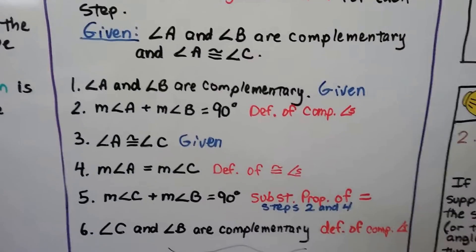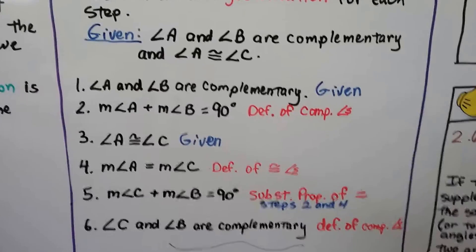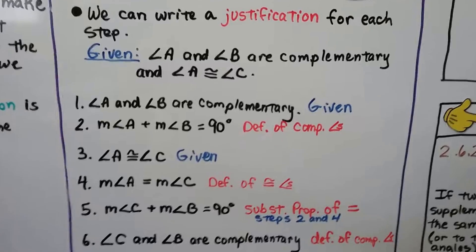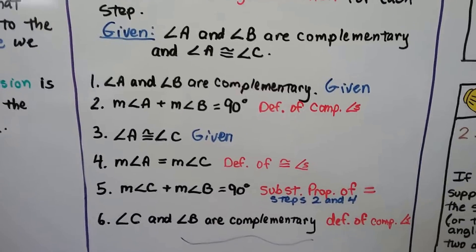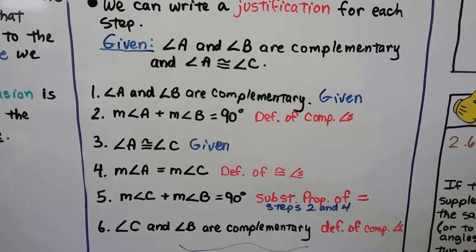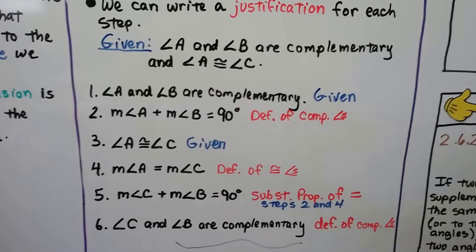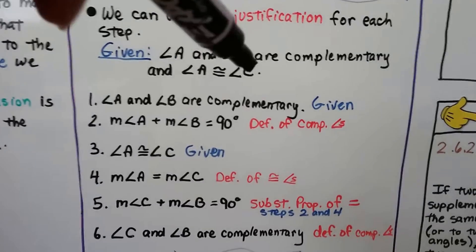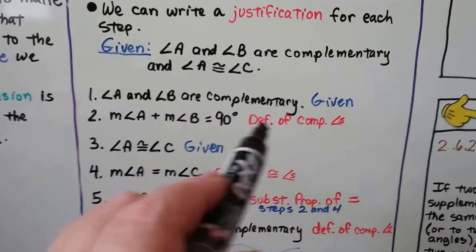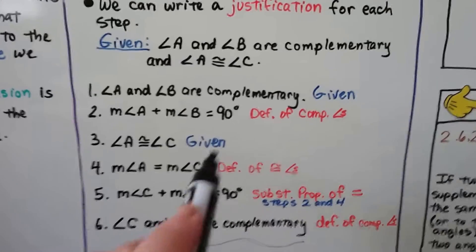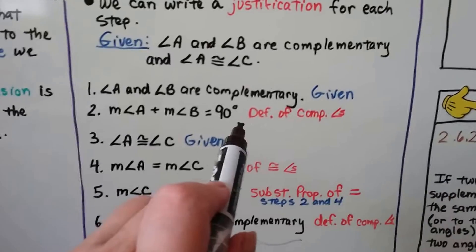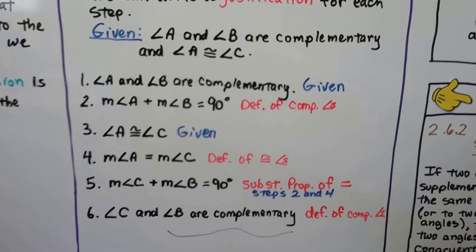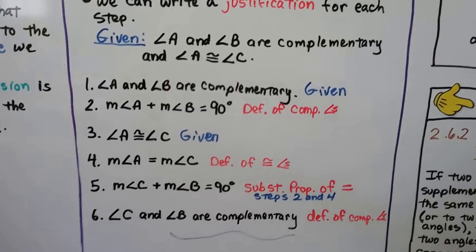We can write a justification for each step. Here we've got six steps, six statements, and six justifications. Our given says angle A and angle B are complementary, and that angle A is congruent to angle C. Our first statement is angle A and angle B are complementary — that was given. Our second statement is the measure of angle A plus the measure of angle B equals 90 degrees. If you remember what complementary angles are, they are two angles that together total 90 degrees, so this statement is the definition of complementary angles.